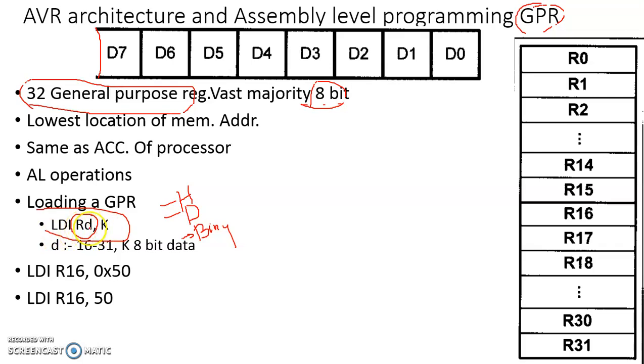D is the register digit that varies from 16 to 31. There are 32 general purpose registers labeled as R0 to R31. You cannot have a D value of 8 or 14 or 15 or 3. You cannot directly load registers R0 to R15 with 8-bit data.